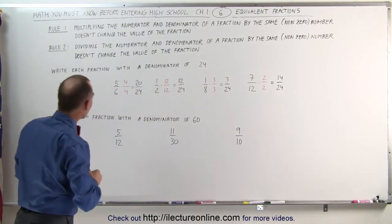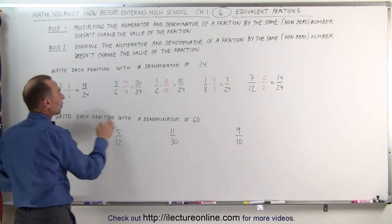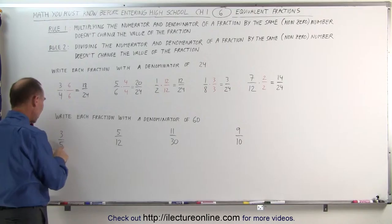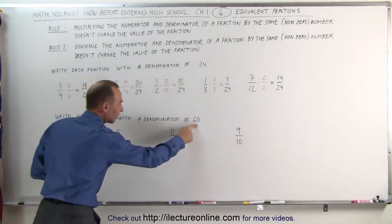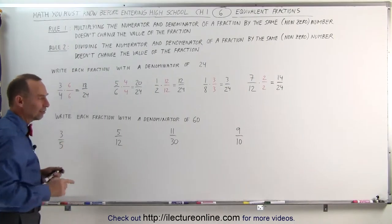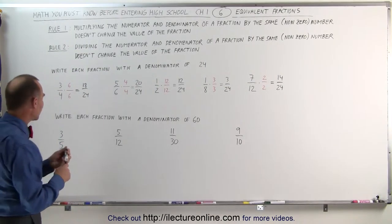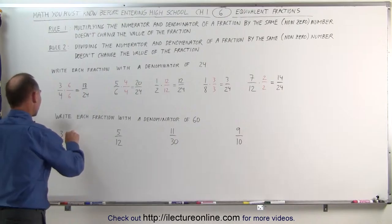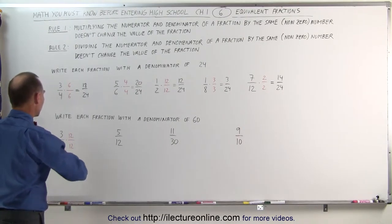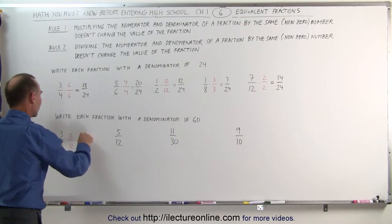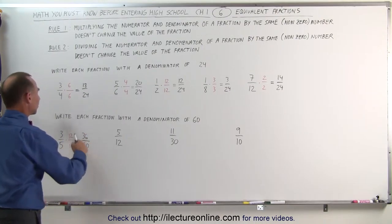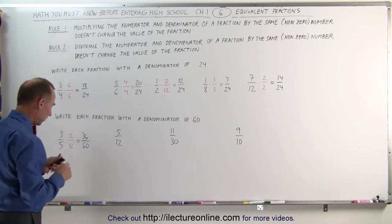In a different example, we can write each fraction with a denominator of 60. I ask myself: how many times is 5 going into 60? The answer is 12. Therefore, if I multiply the denominator by 12, I get 60, and I must multiply the numerator by 12 as well. I multiply by 12 divided by 12 and get the following fraction: 3 times 12 is 36, and 5 times 12 is 60. So 36 divided by 60 is the equivalent fraction to 3 divided by 5.